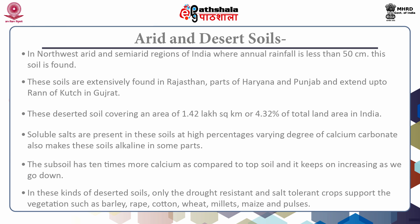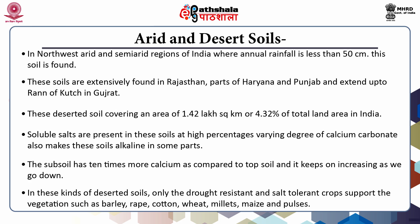Next is desert soil. A large part of arid and semi-arid regions in Rajasthan and adjoining areas of Punjab and Haryana lying between the Indus and the Aravallis, covering an area of 1.42 lakh square kilometers and receiving less than 50 centimeters of annual rainfall, is affected by desert conditions. The Rann of Kutch in Gujarat is an extension of this desert. Some of these soils contain high percentage of soluble salts, are alkaline with varying degree of calcium carbonate, and are poor in organic matter. The phosphate content of this soil is as high as in normal alluvial soils.